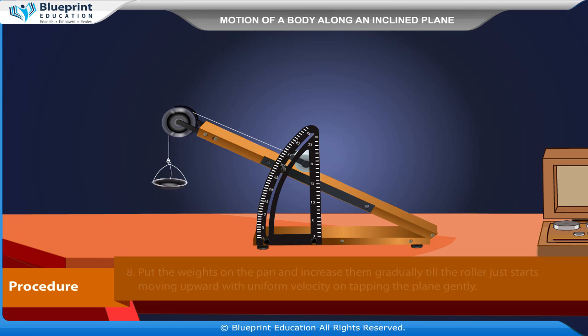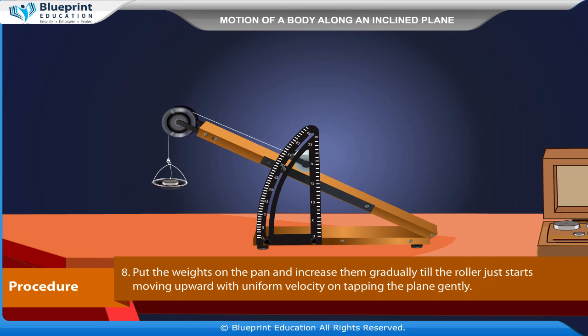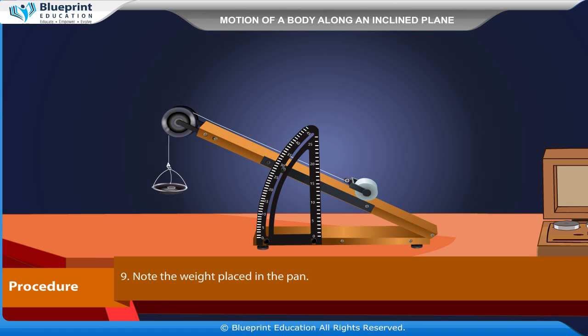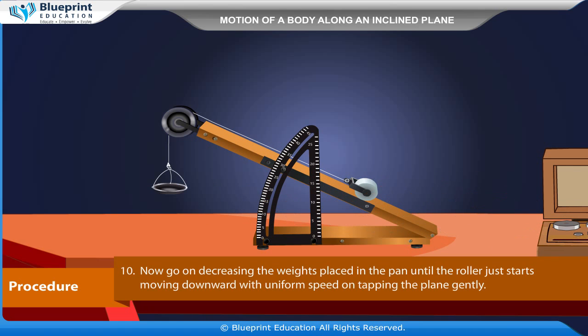Put the weights on the pan and increase them gradually till the roller just starts moving upward with uniform velocity on tapping the plane gently. Note the weight placed in the pan.